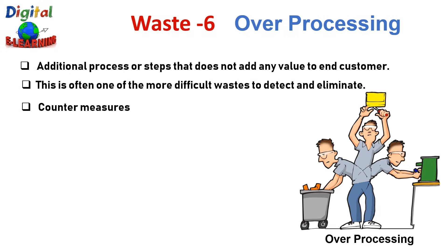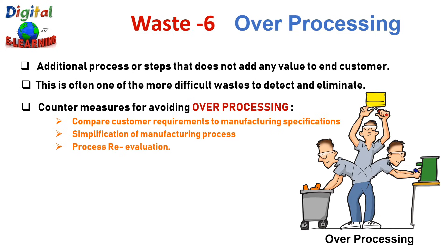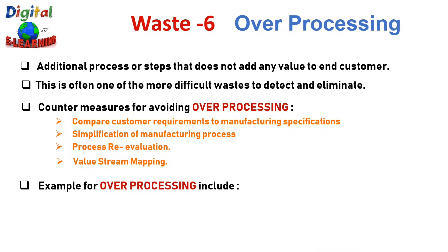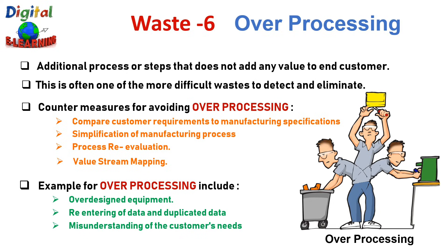Countermeasures for avoiding over-processing include: comparing customer requirements to manufacturing specifications, simplification of the manufacturing process, process re-evaluation, and developing a value stream mapping. Some examples of over-processing include over-designed equipment, re-entering and duplication of data, and misunderstood customer needs.